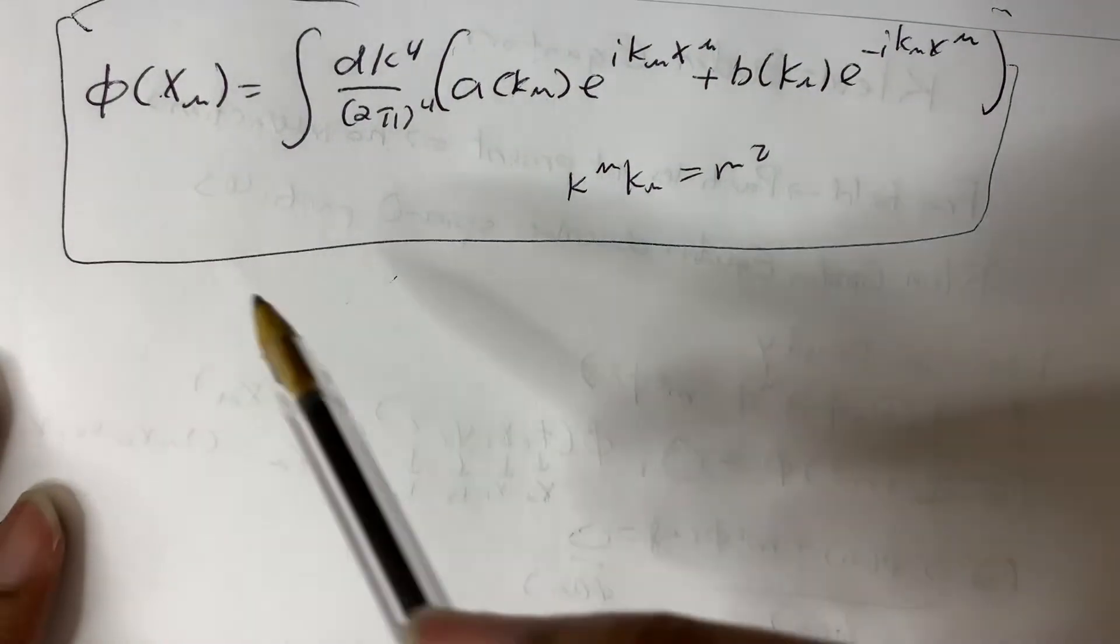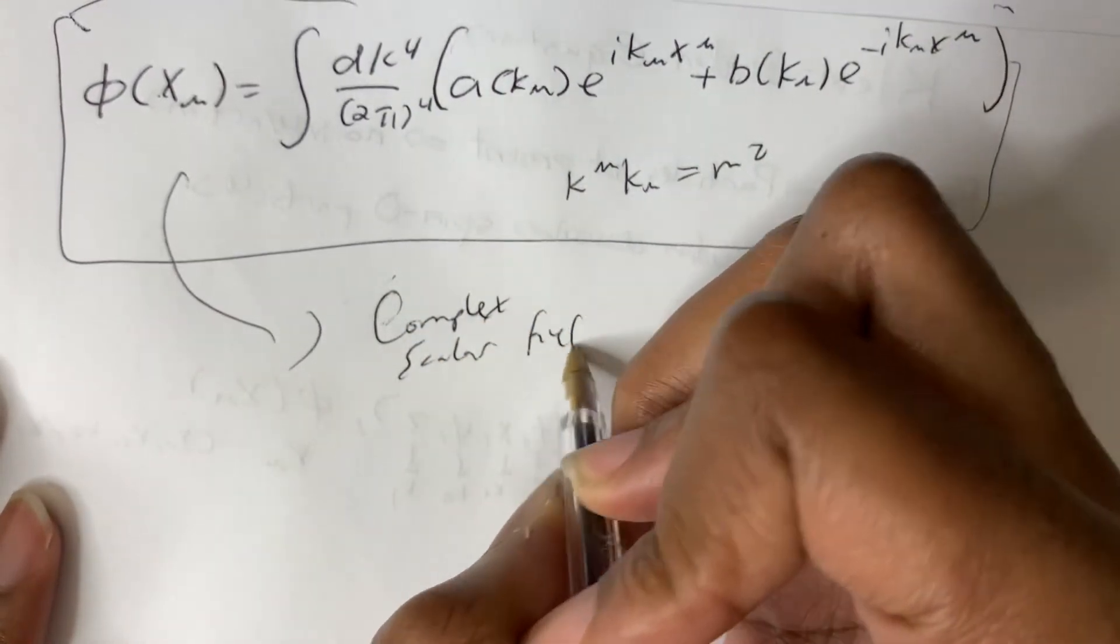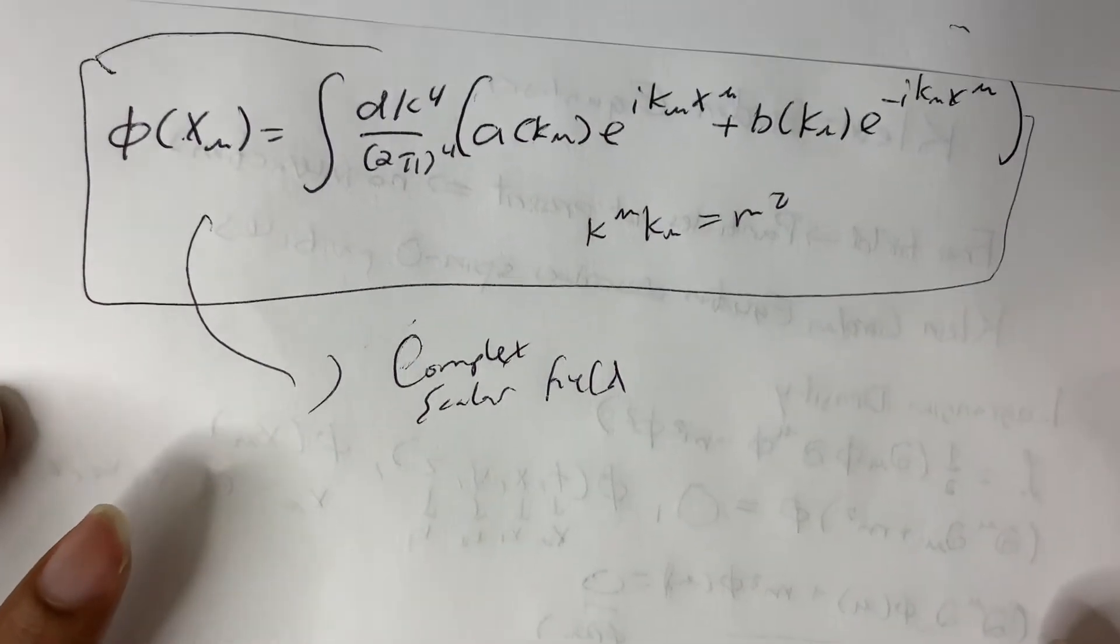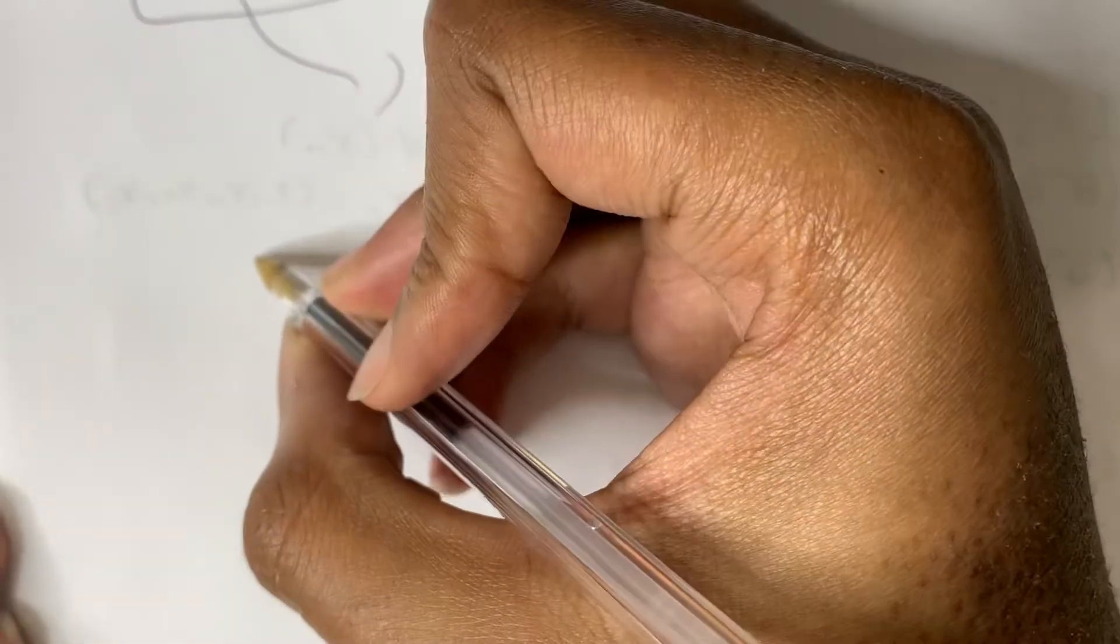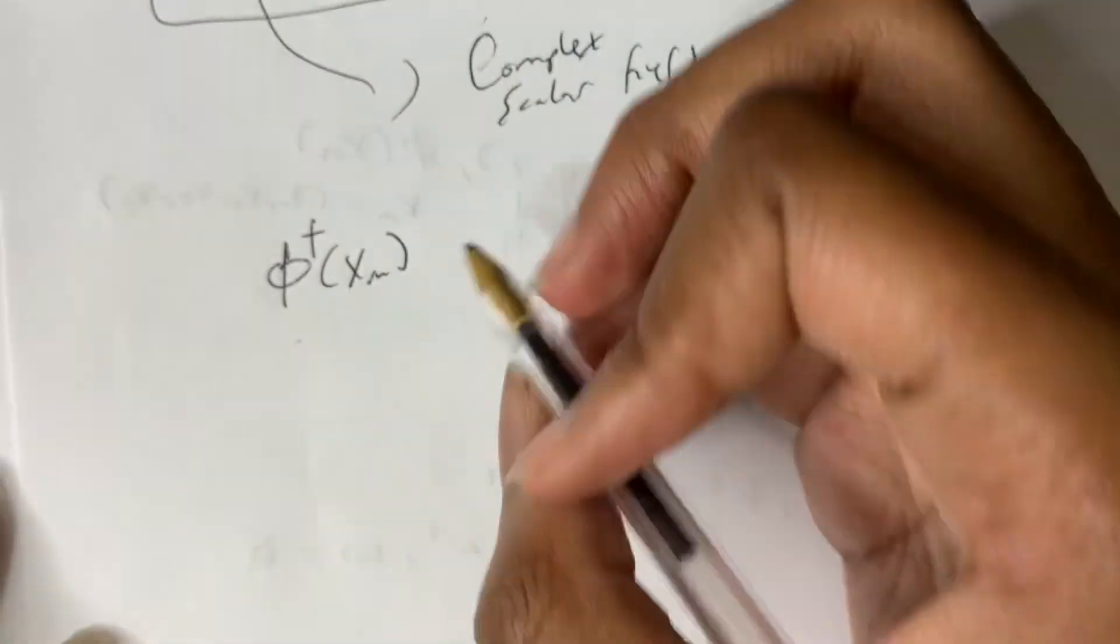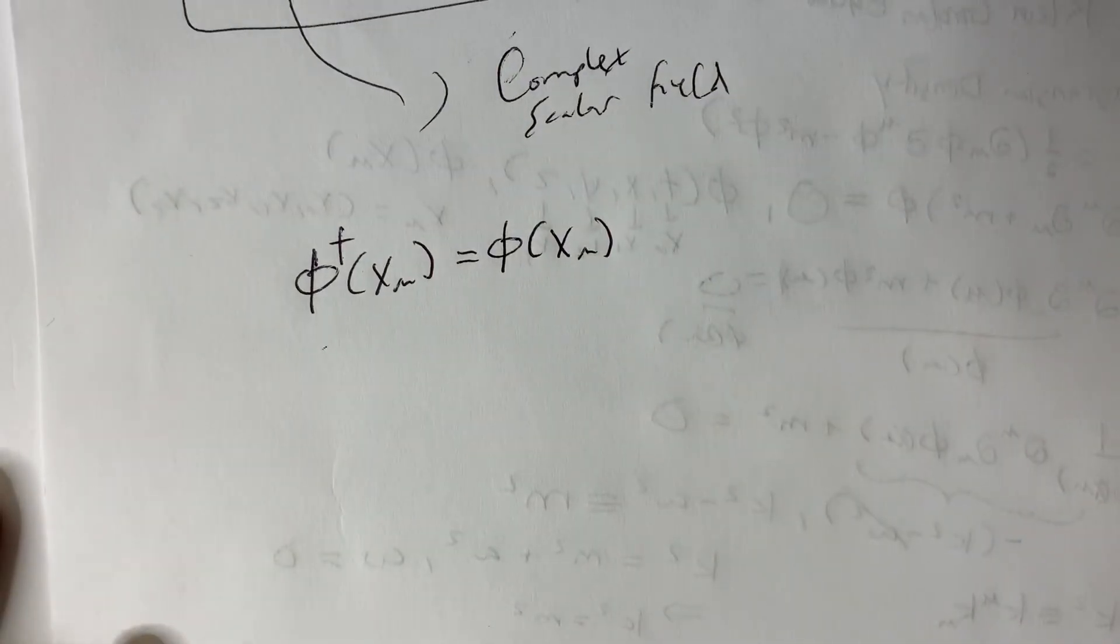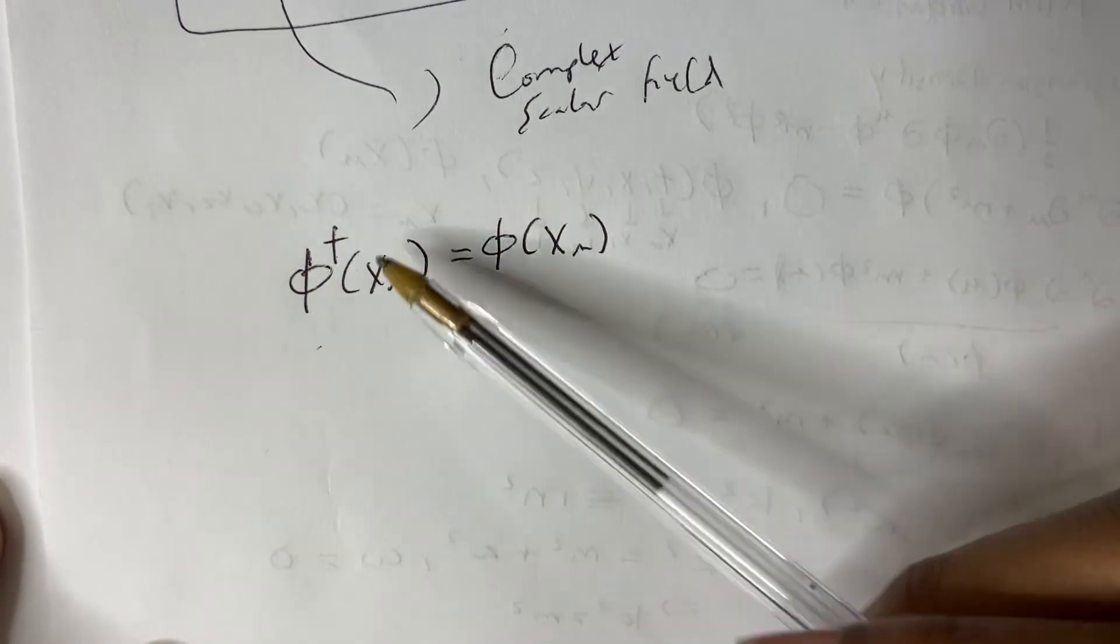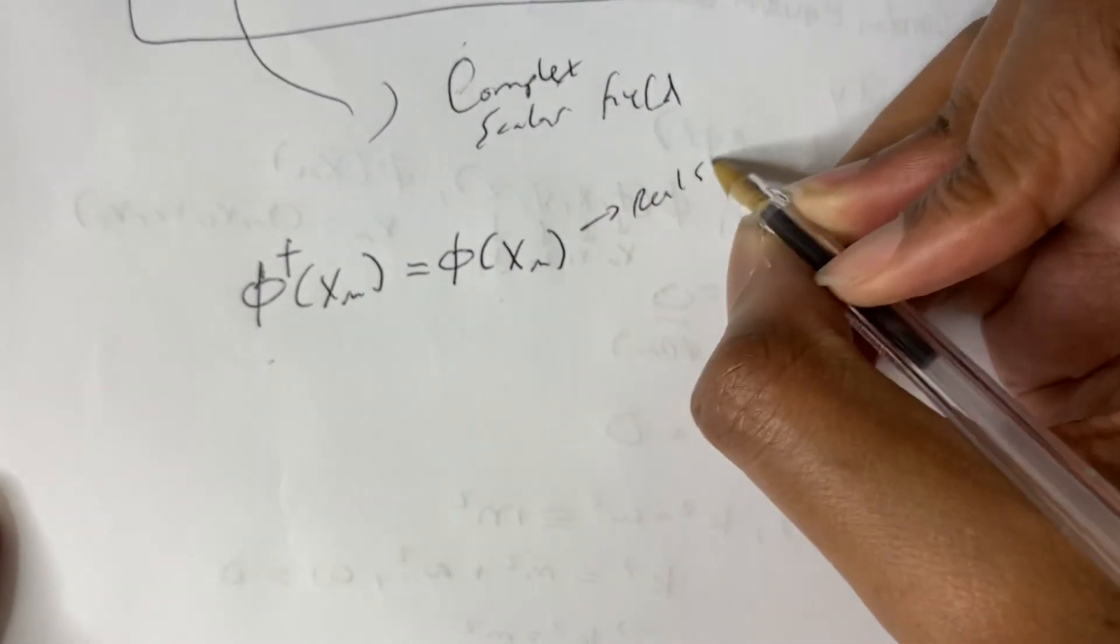Now, this actually describes what we call a complex scalar field. In the sense that, well, we have complex numbers here. So sometimes we want to say the real scalar fields. And remember that if our field is real, this means that the complex conjugate of the field is going to equal the same field. That's the definition for a real scalar field.